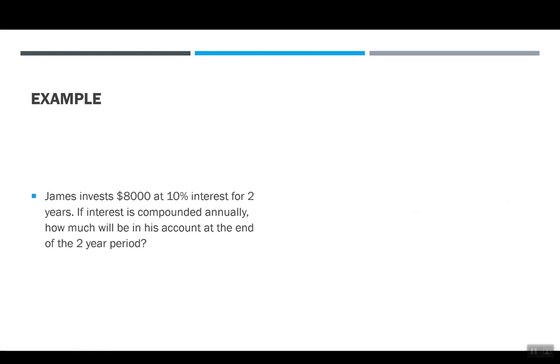Take example one. James invests $8,000 at 10% interest for two years. If interest is compounded annually, how much will be in the account at the end of the two-year period?